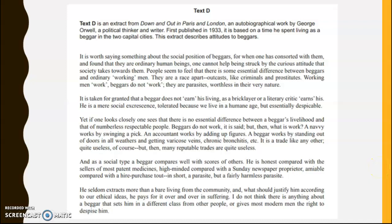Here we have a 1900s text — specifically from the 1930s — by George Orwell called 'Down and Out in Paris and London,' in which he spends time living as a beggar to understand what it must be like to be them. It describes attitudes towards beggars. It's a really good example, partly because it comes from a real past exam from OCR, and partly because it's very useful for understanding changes to society in the 1930s. The key thing you need to do is explore how this text is different from one that comes earlier or later, and why.